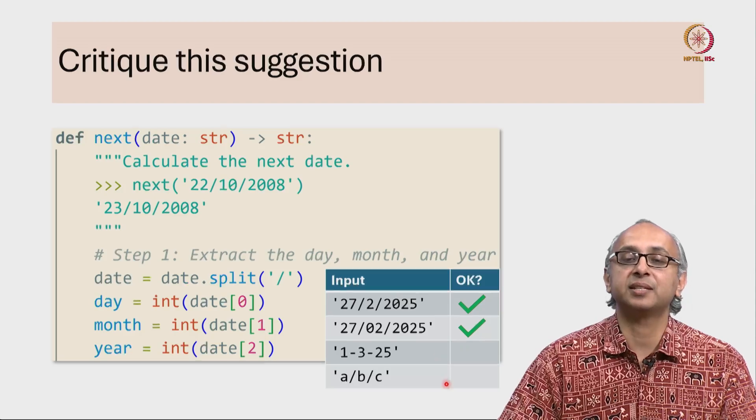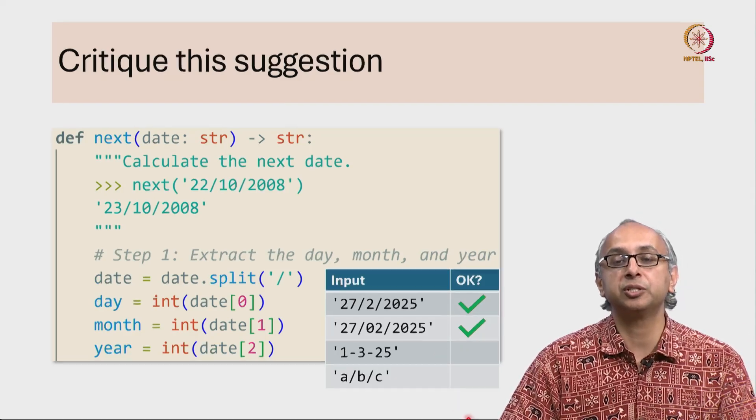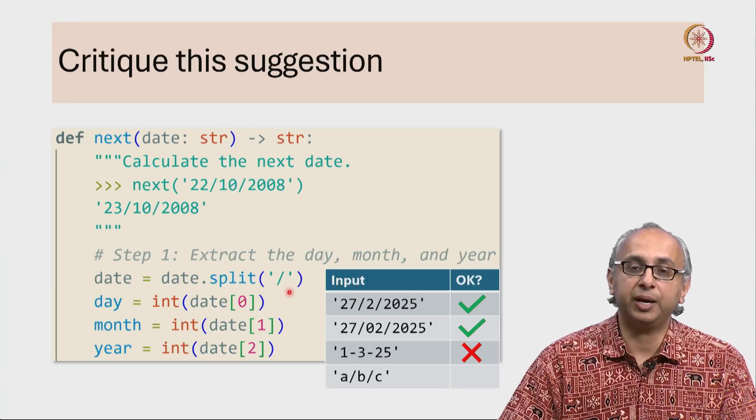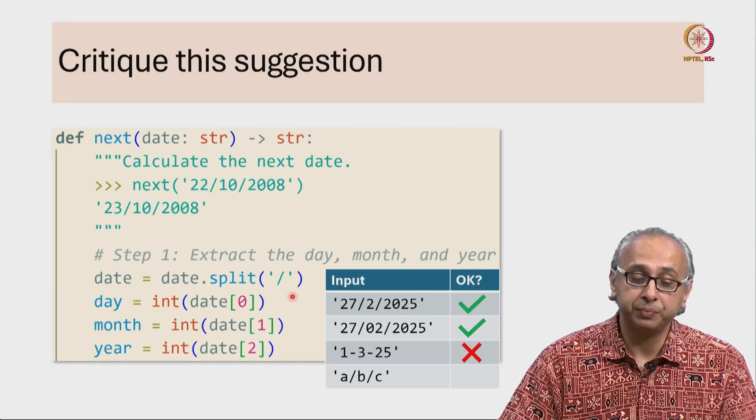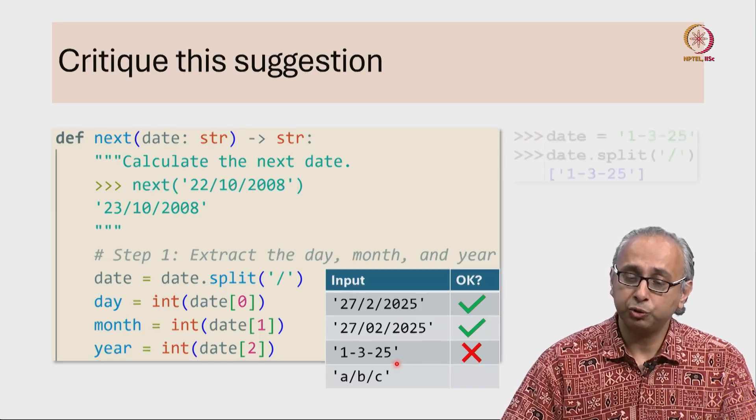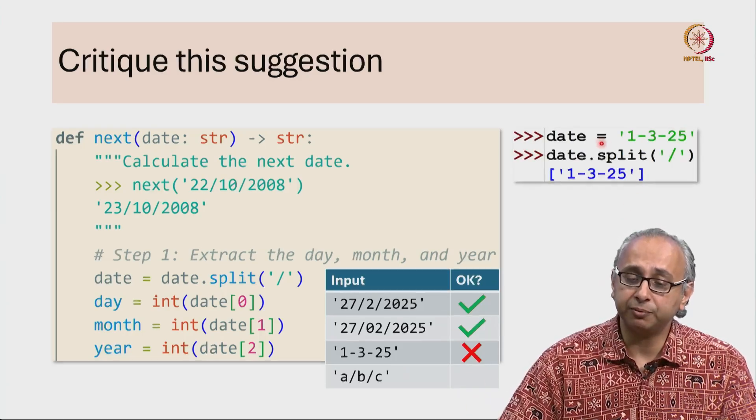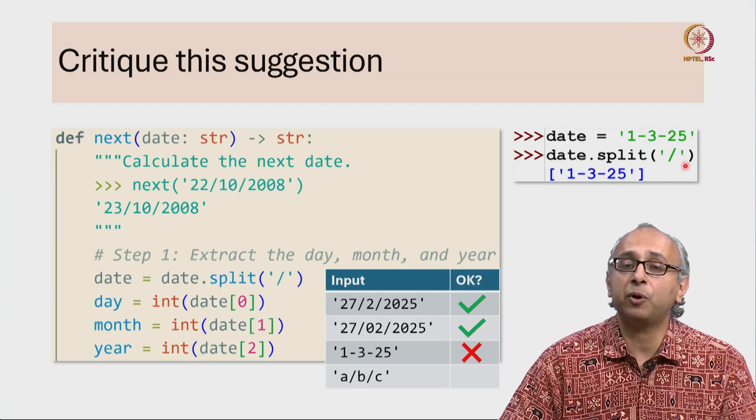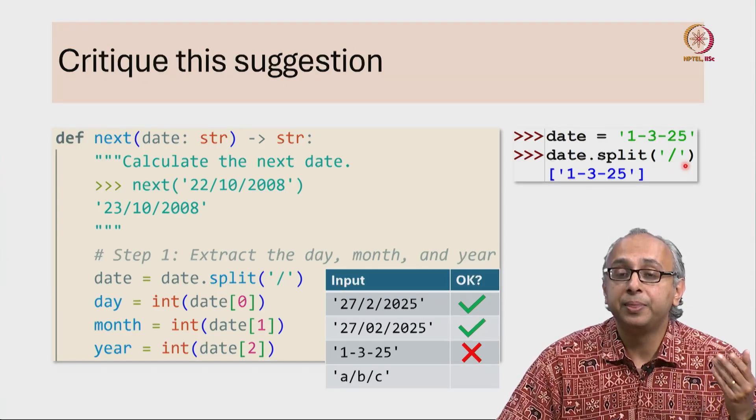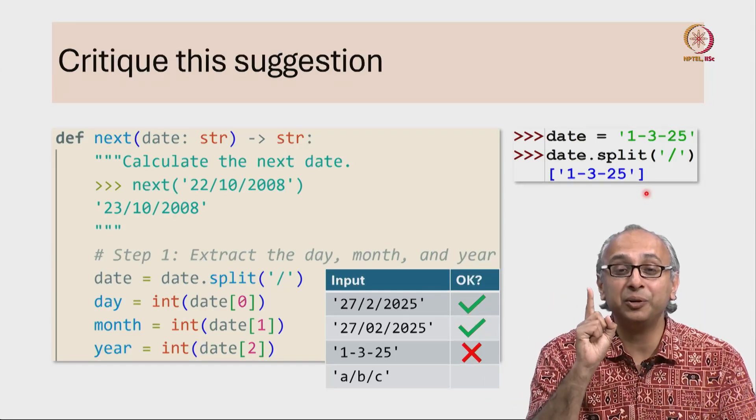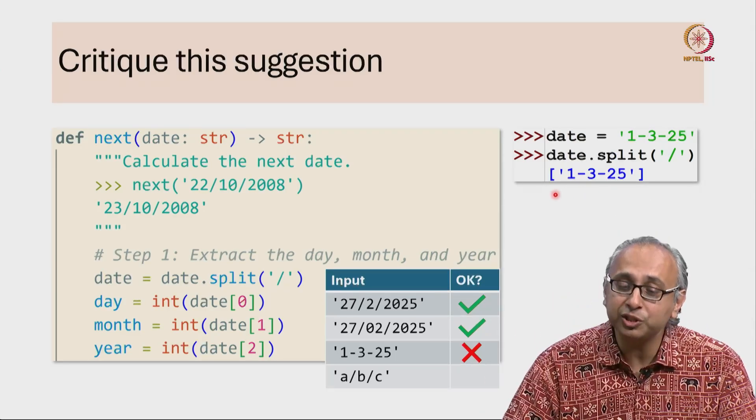In both these cases however, this code doesn't do what we want. In this first case, what happens when we try the split operation? Well, there are no forward slashes in this string. If we experiment in the REPL where we've set date to this, when we split it by forward slash, this produces a singleton list - a list containing only one item, which is the original string.